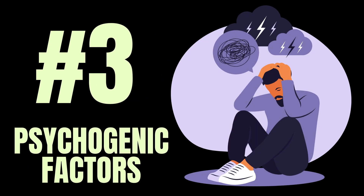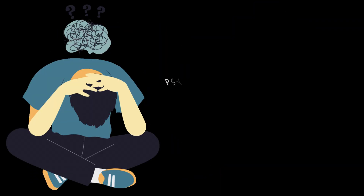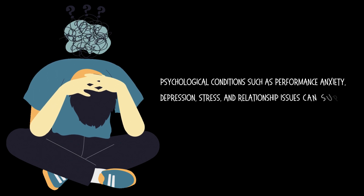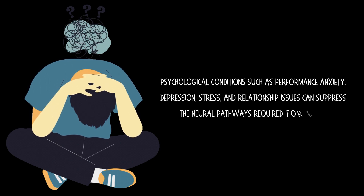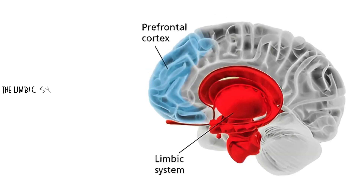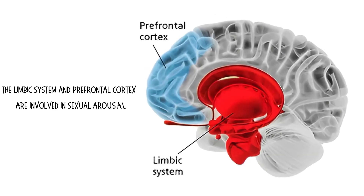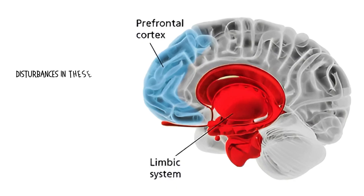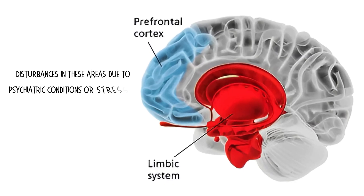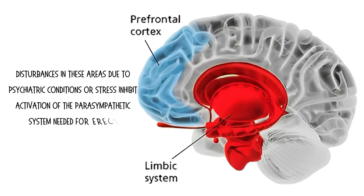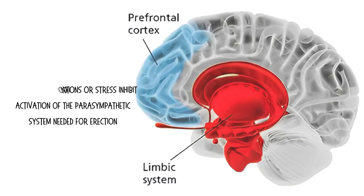Number 3: Psychogenic factors. Psychological conditions such as performance anxiety, depression, stress, and relationship issues can suppress the neural pathways required for erection. The limbic system and prefrontal cortex are involved in sexual arousal. Disturbances in these areas due to psychiatric conditions or stress inhibit activation of the parasympathetic system needed for erection.